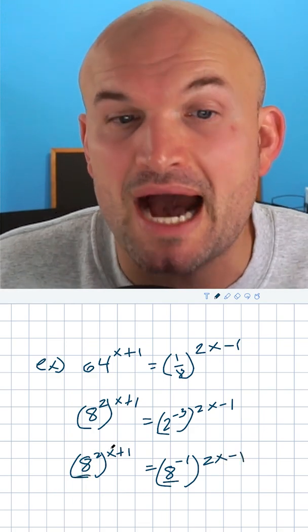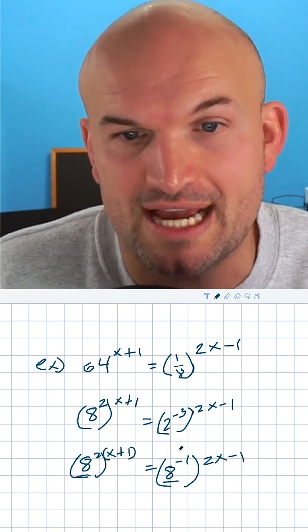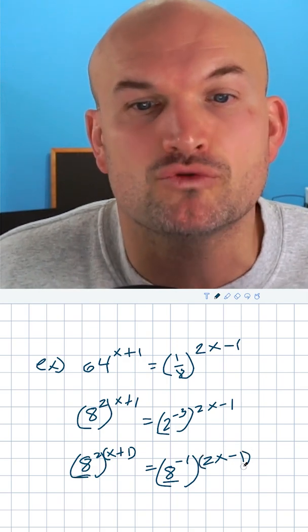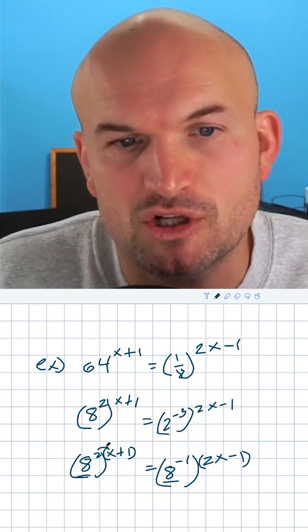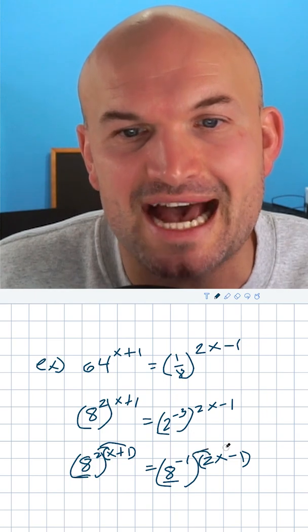This x plus one is a power, so we need to group this all together. This 2x minus one is a power, so it needs to be grouped together. You need to make sure you multiply by both terms inside of those parentheses.